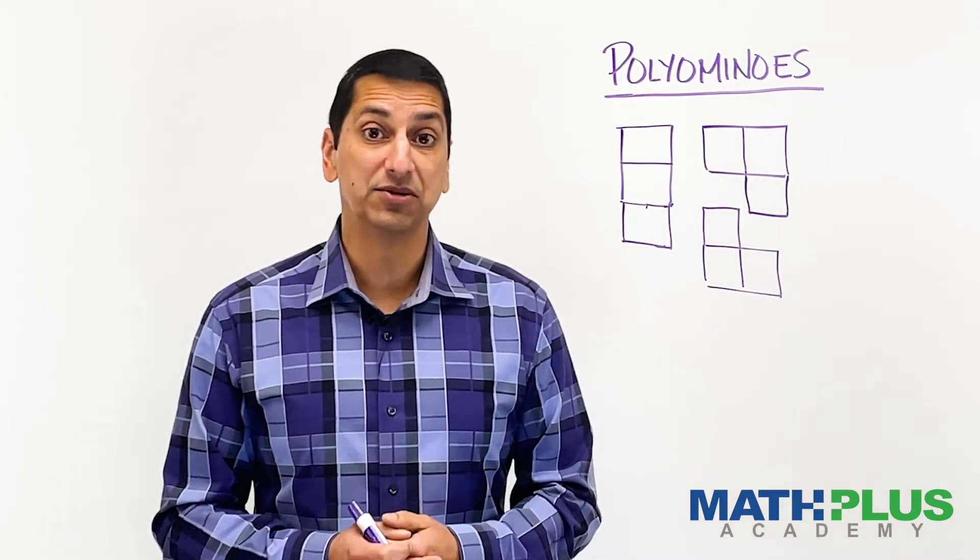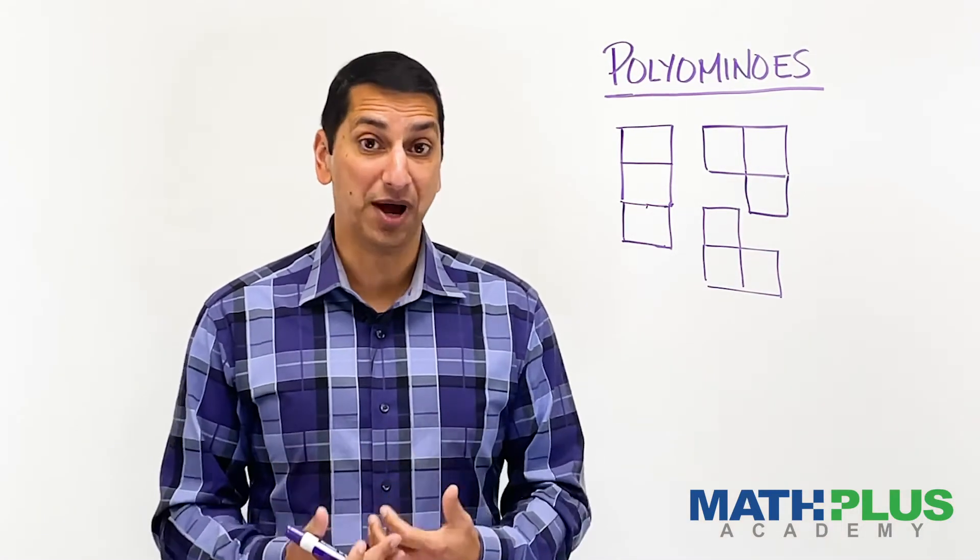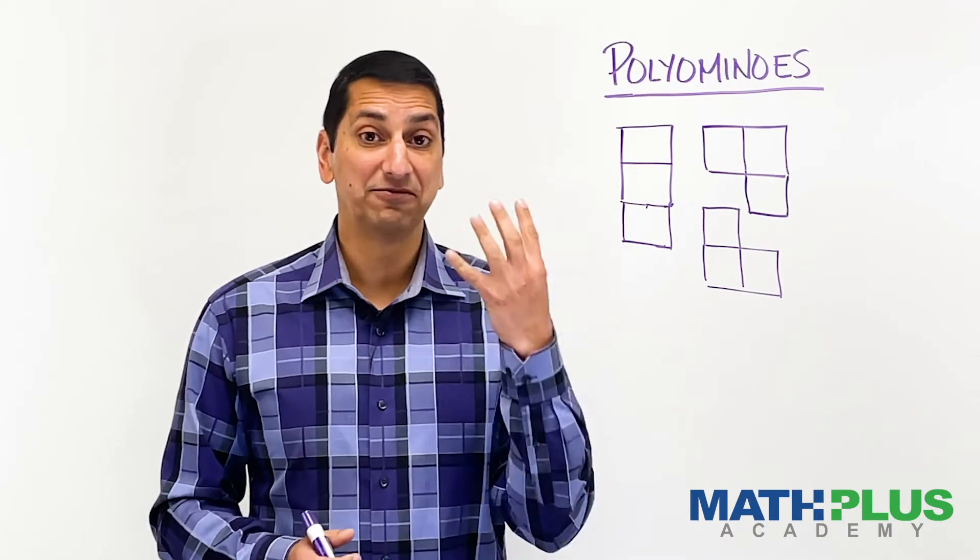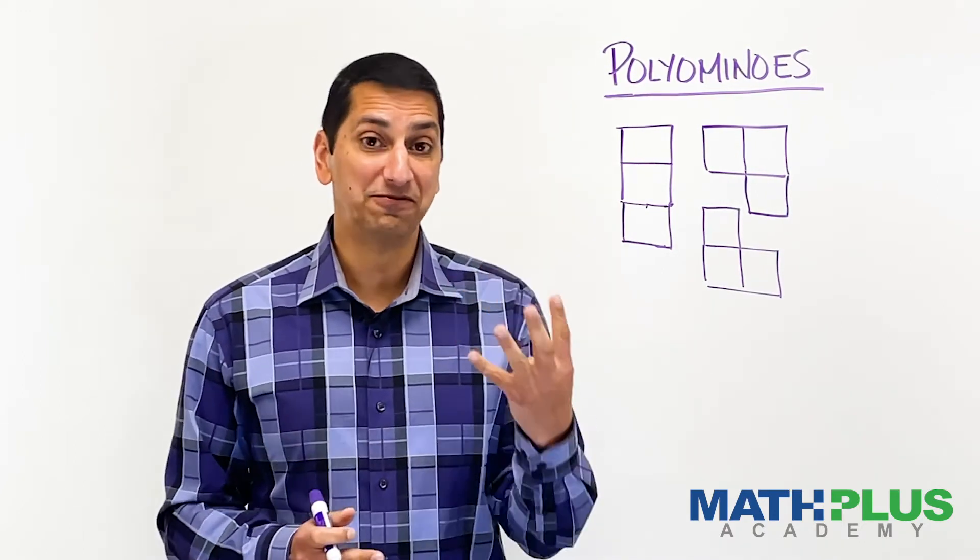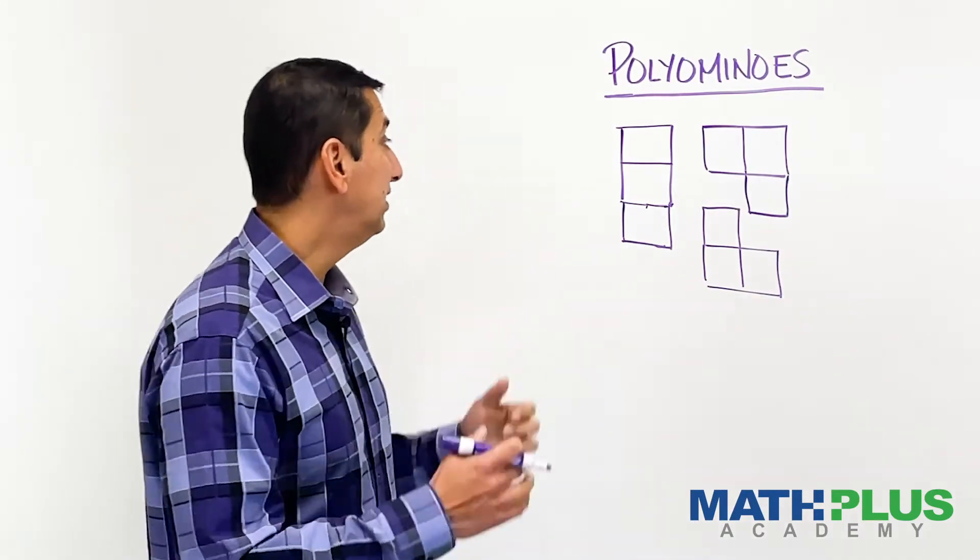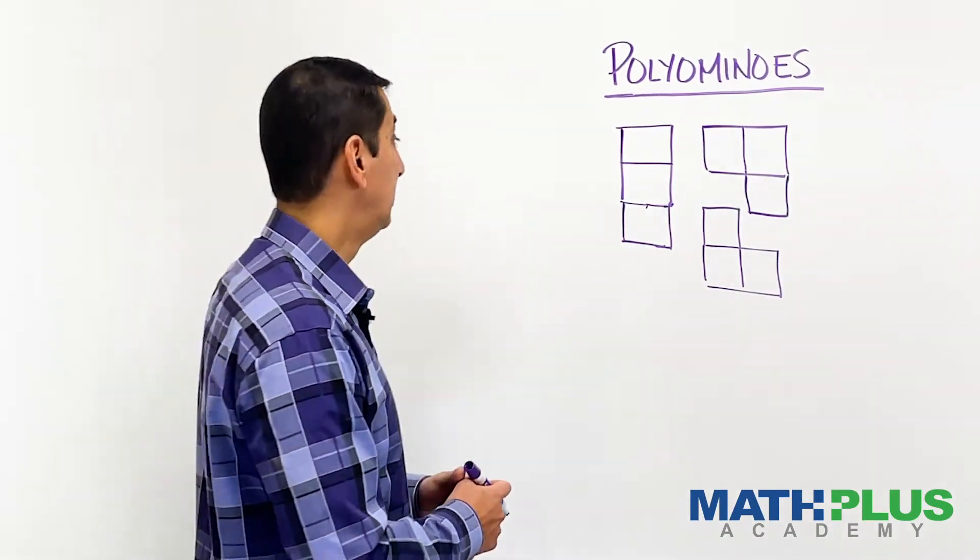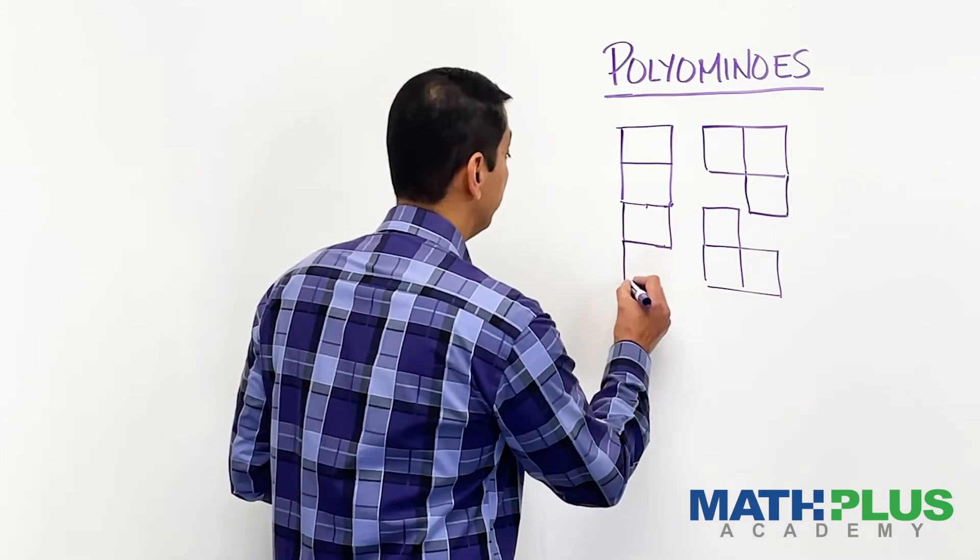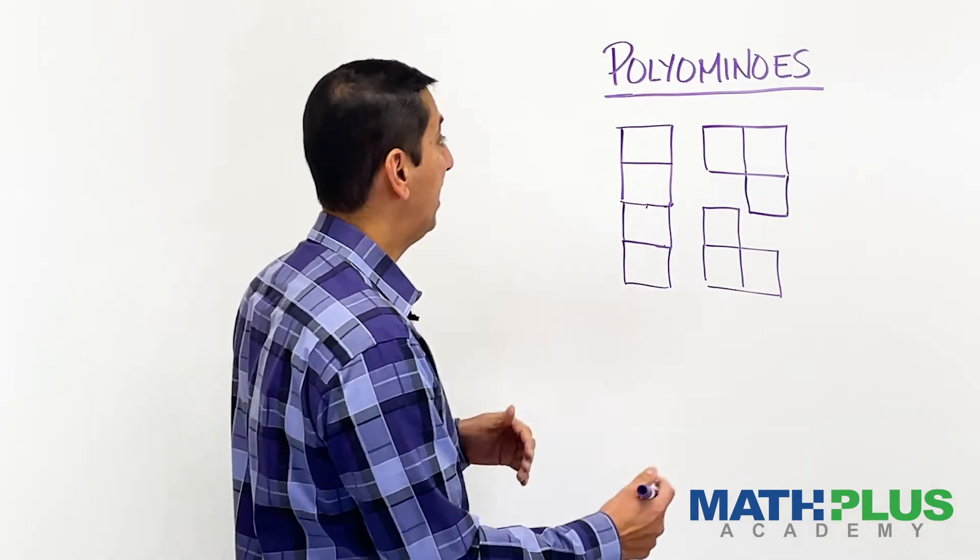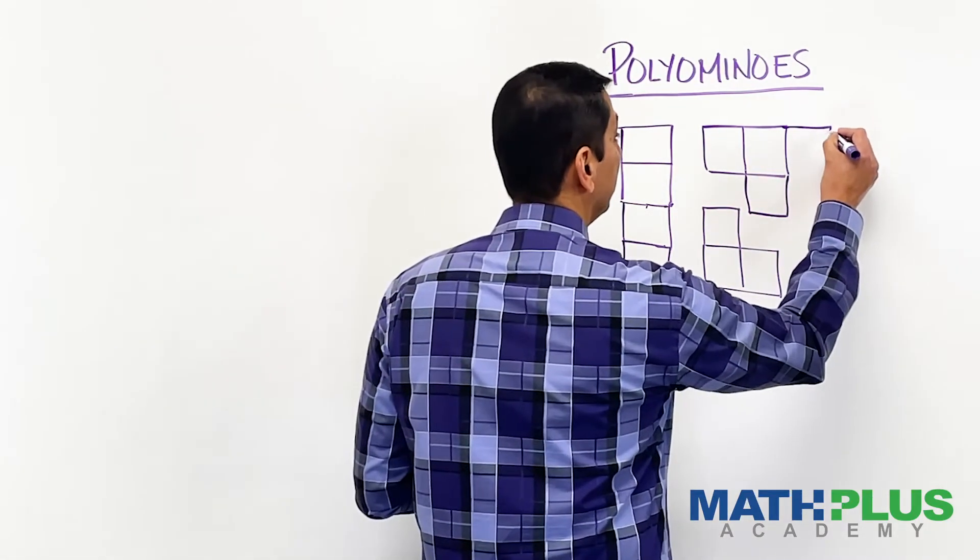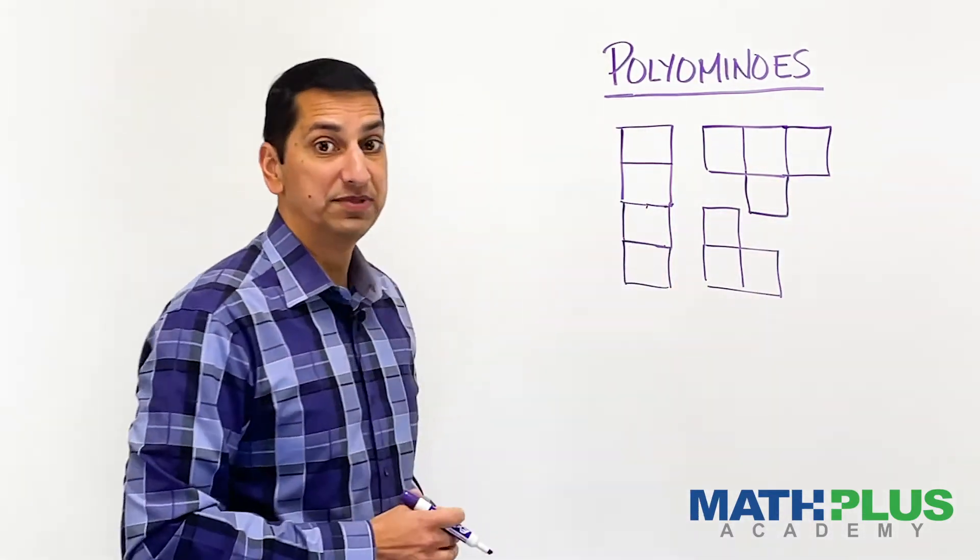So the next thing we can do is explore tetrominoes, things that are made out of four squares, polyominoes that are made out of four squares. And I could immediately start from here and make some tetrominoes. Maybe I add a square there. Okay, that's a straight line tetromino. Maybe I add a square here. That's a T-shaped tetromino.